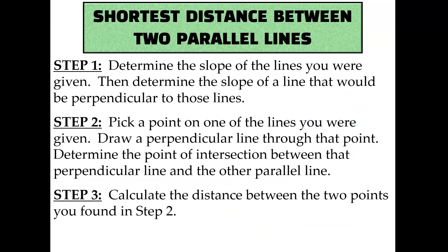So the first step each time you're asked to solve a problem like this is to find the slope of the lines you were given, and then identify the slope of a line that would be perpendicular to both of those lines. Using that perpendicular slope, count from any point you pick from one of the lines until you cross the other line. Then take that point of intersection and the original point you counted from, plug those two numbers into the distance formula, and simplify. Let me show you what I mean.